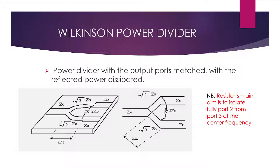If you take a look at the diagram, using this figure we can see that there is a resistor. The main aim of this resistor is to isolate port 2 from port 3 at the center frequency. So for example, if this is port 2 and this is port 3, this resistor is going to isolate port 2 from port 3 at the center frequency. That is the main aim of this resistor.